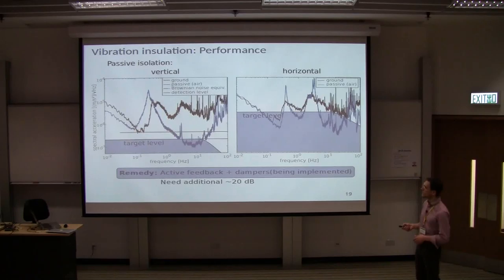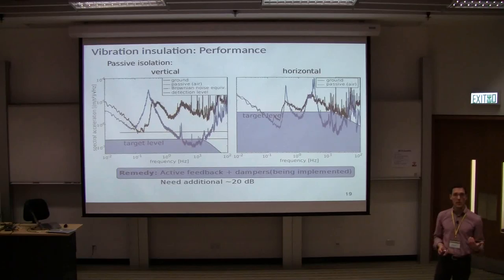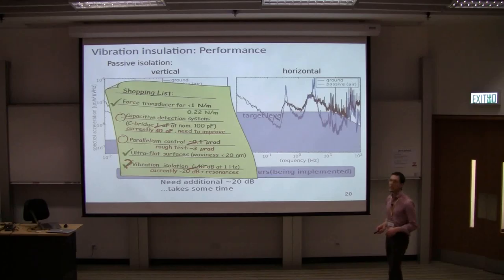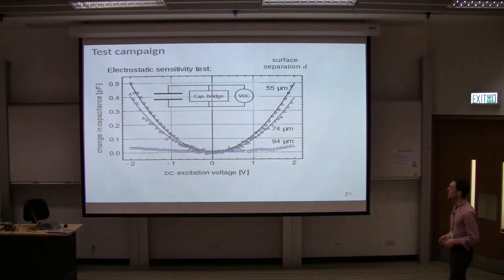And the target which we eventually have is here. So in the vertical direction, we want to go down over the entire spectrum down to the Brownian noise, which is this line here. And in the horizontal direction, the target is a bit relaxed because we have only approximately 5% coupling between horizontal and vertical modes of our sensor. So it can be a bit more relaxed. So looking again at the list, it doesn't look that good. We have vibration insulation, but actually at the moment it makes the situation worse than it would be without. But we know how to solve that.